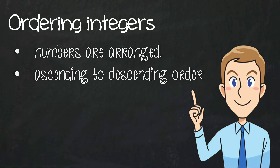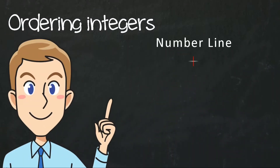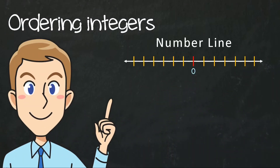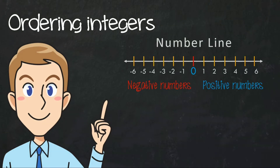As we know, integers on a number line are differently placed. The center of the number line is zero. On the right-hand side, we have the positive numbers, while on the left-hand side, we have the negative numbers.